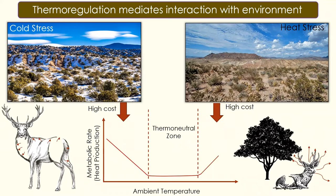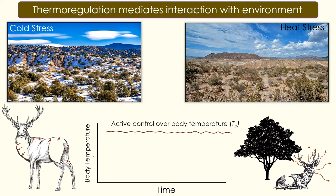Both of these behaviors can also influence activity, where under cold stress or heat stress, animals might seek out different shelters such as shade. For large animals like us — and this buck here — with large volumes to produce a lot of heat and low surface areas to not lose a lot of heat, it becomes relatively easy to maintain a nearly constant body temperature across time. We call these animals homeothermic.